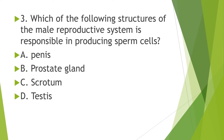For number 3: Which of the following structures of the male reproductive system is responsible for producing sperm cells? A. penis, B. prostate gland, C. scrotum, or D. testis.